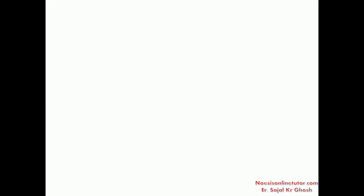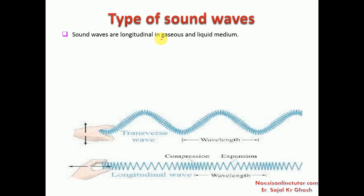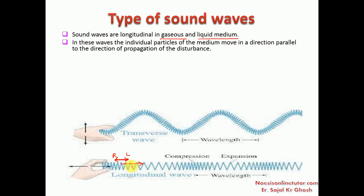There are two types of sound waves. Sound waves are longitudinal in gaseous and liquid mediums. In longitudinal waves the individual particles of the medium move in a direction parallel to the propagation of disturbance - meaning the particles move right to left and the sound wave also passes right to left. This is called a longitudinal wave.